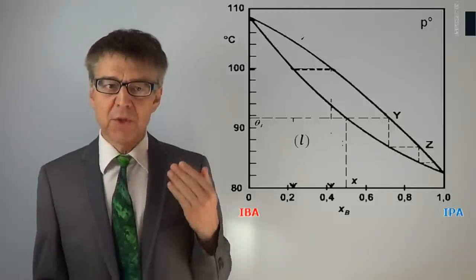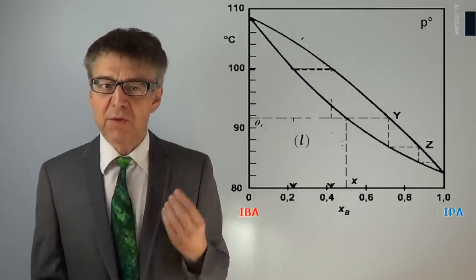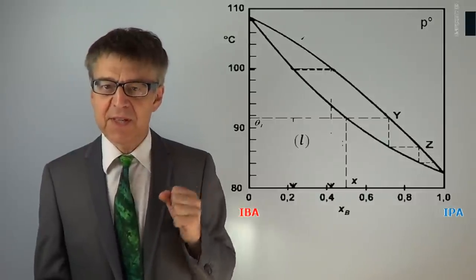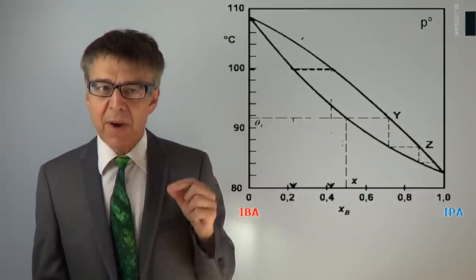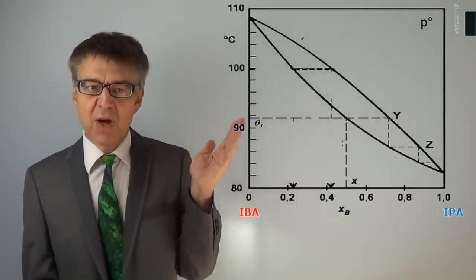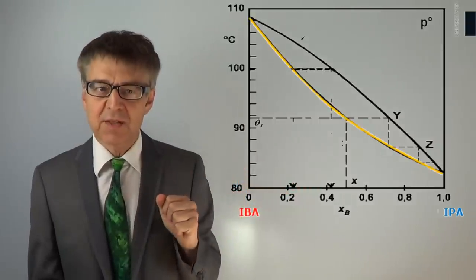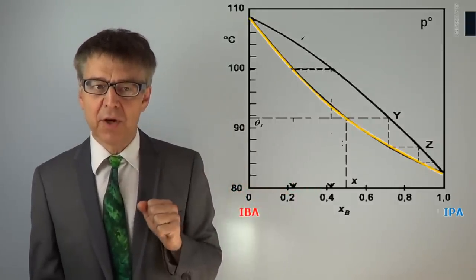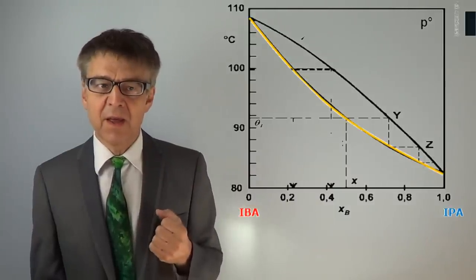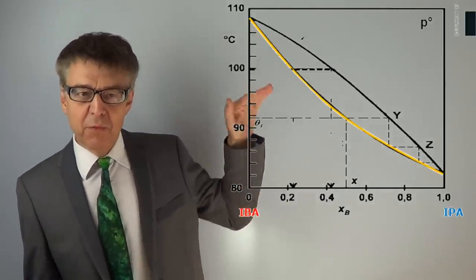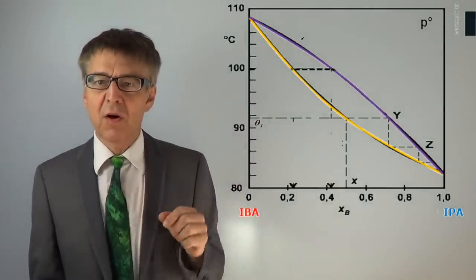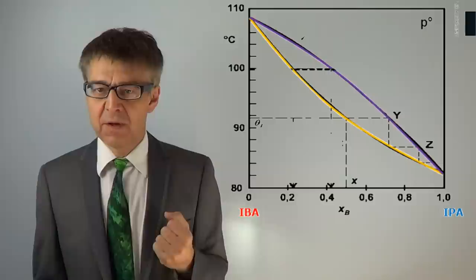The boundaries of the homogeneous regions are called binodals. Binodals fence off the homogeneous areas from the heterogeneous areas in a phase diagram and often have specific names. The binodal which marks off the region of the homogeneous liquid to higher temperatures is called the bubble point curve or boiling point line — the yellow line. The binodal which marks off the region of the gas phase to lower temperatures is called the dew point curve — the purple line.